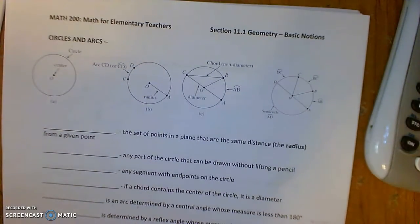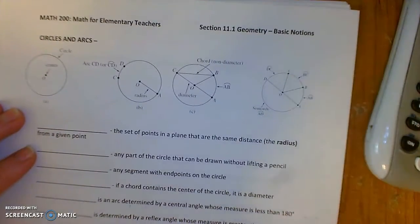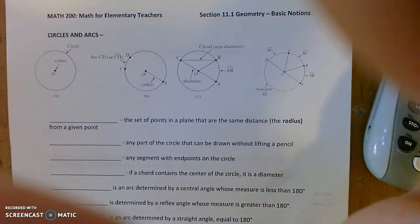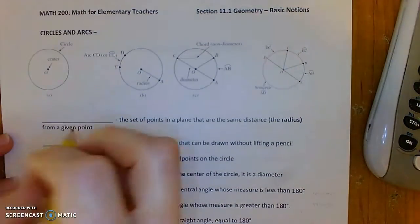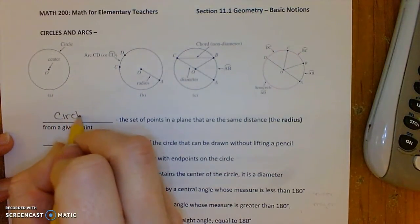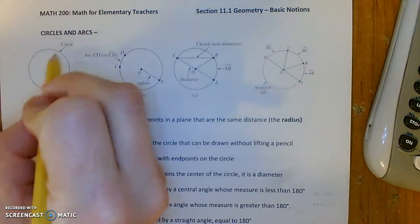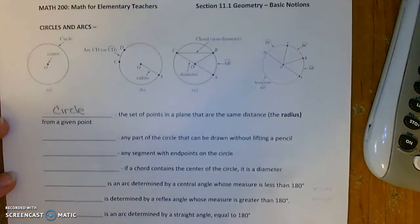Alright, now let's start to talk about circles and other types of intersecting lines. So what is a circle? We define a circle as the set of all points that are the same distance away from the center. And we can use a compass to allow us to draw a circle.